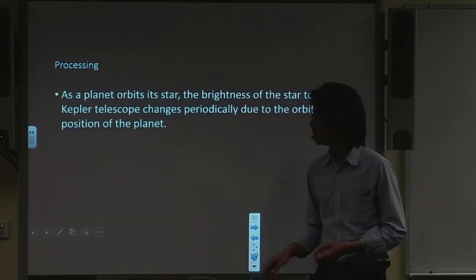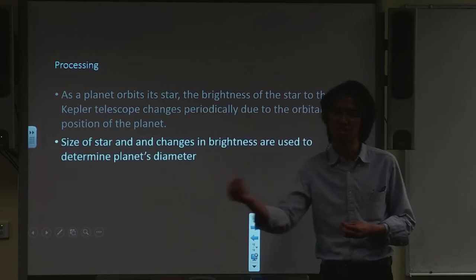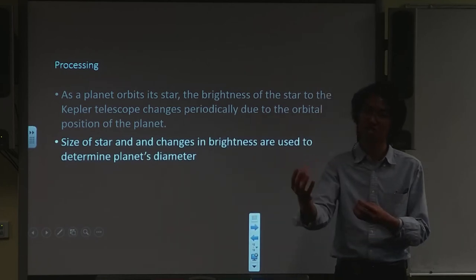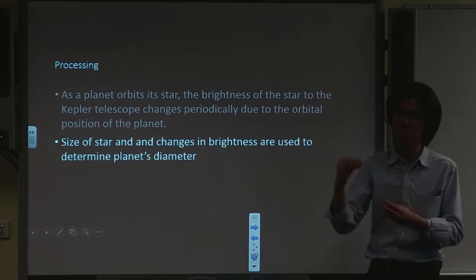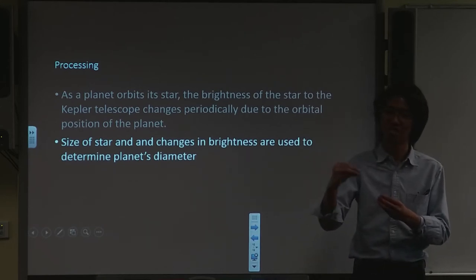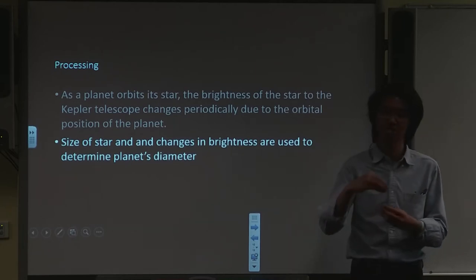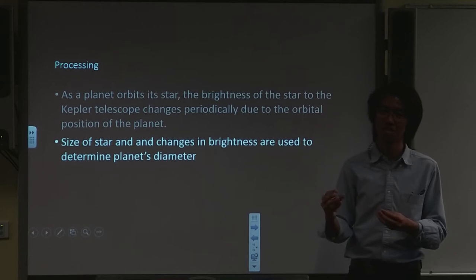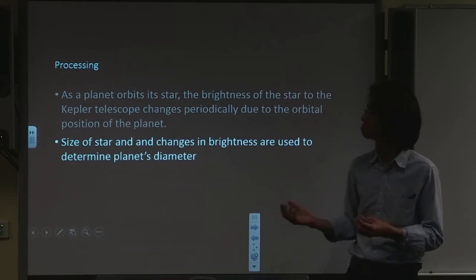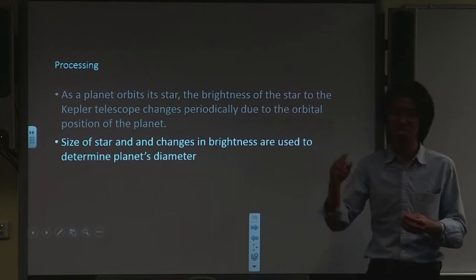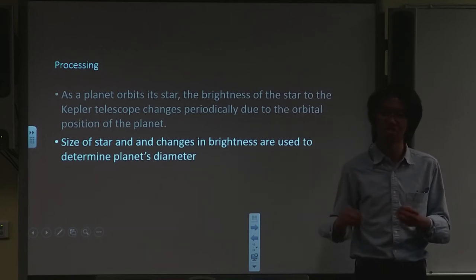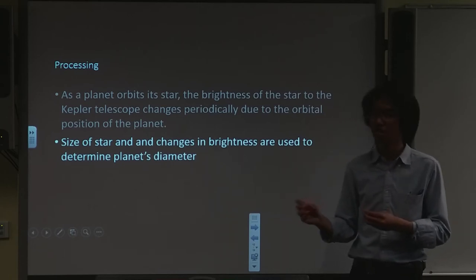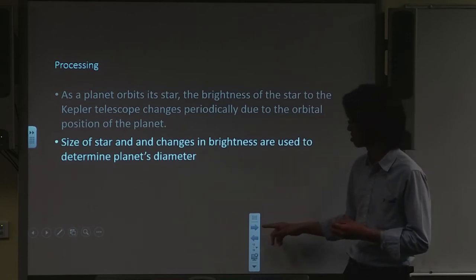As the planet comes in between us and the host star, it blocks light. So the host star to us appears dimmer at that period. But as the planet moves to other positions, the host star appears brighter. So this happens periodically, and we can use the time taken to measure the orbital period of the planet.